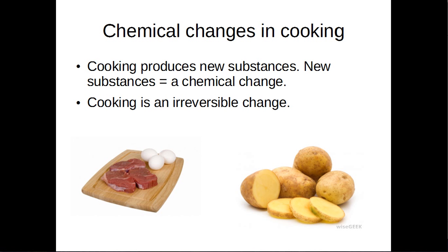With potatoes, potatoes are plants and so each potato cell is surrounded by a cell wall. In animal cells they just have a cell membrane, whereas in a plant cell they have a cell membrane and a cell wall. The cell wall is actually made of cellulose, but humans cannot digest cellulose so it's difficult for us to get to the potato inside the cell. Cooking a potato basically ruptures the cell wall and makes it softer, more flexible, and much easier to digest.